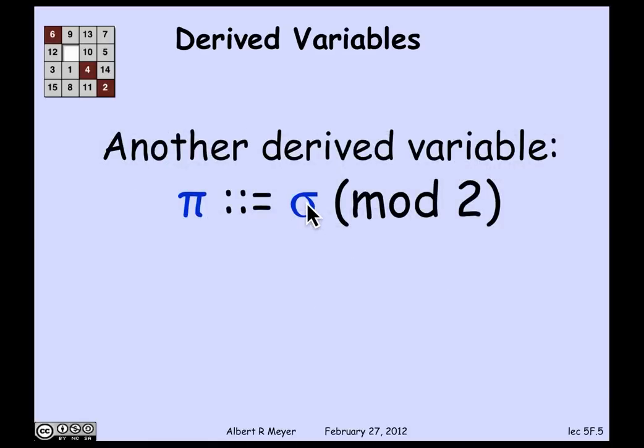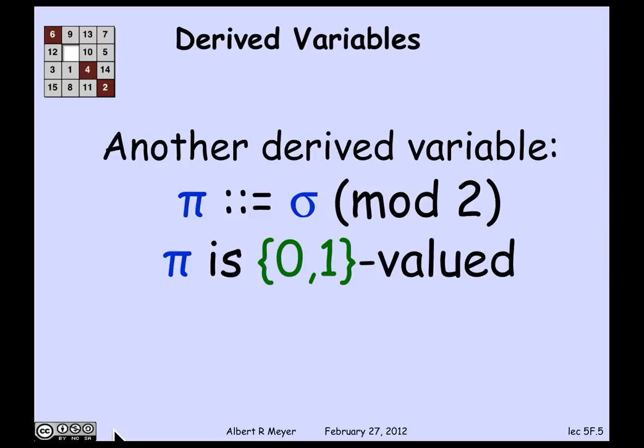Another useful derived variable for that robot example was the parity of sigma, whether or not the number was even or odd. So pi is a 0, 1 valued variable, which takes the value 0 if the sum is even and 1 if the sum is odd.